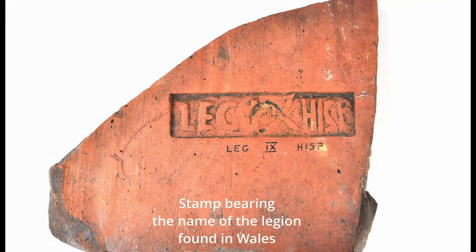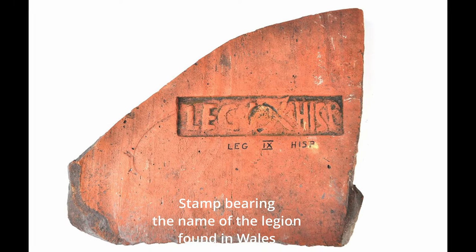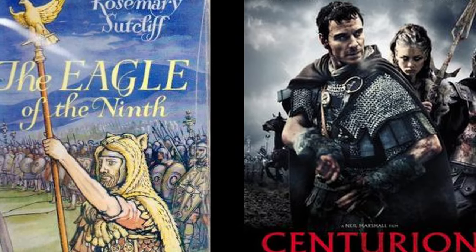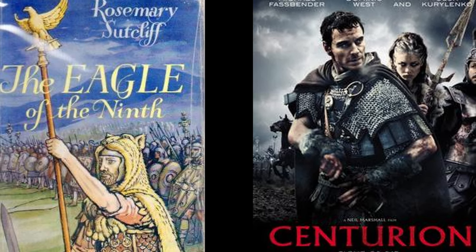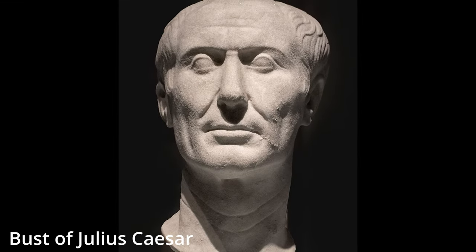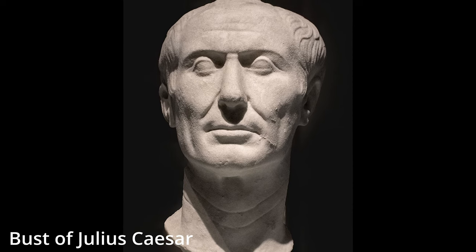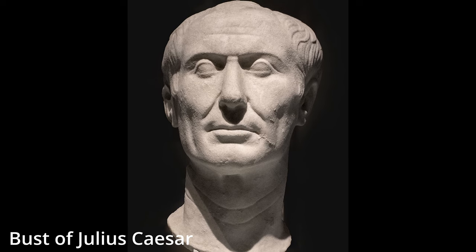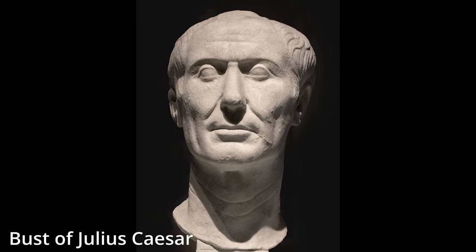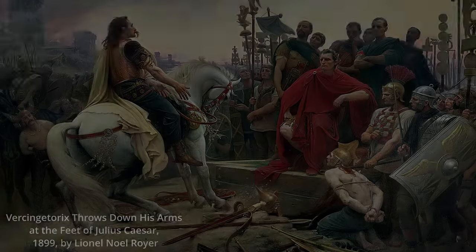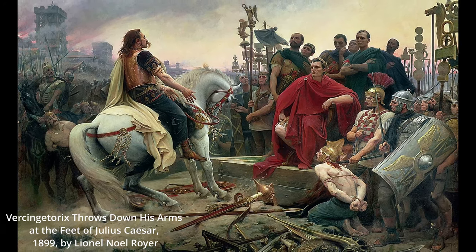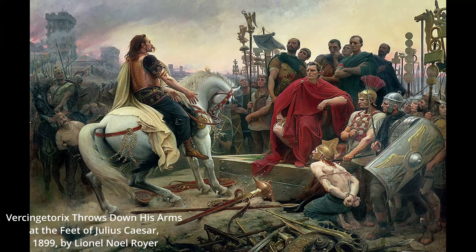The Legio IX Hispana, or the 9th Spanish Legion, was a Roman legion that has been lost to history, becoming something of a cultural icon with novels, movies, and endless theories about what happened to it. The legion likely got its start in 90 BCE during the Social War, but is most famous for being assigned to Julius Caesar when he became governor of Cisalpine Gaul, inheriting the 7th, 8th, 9th, and 10th legions. The legion served under Caesar during his Gallic Wars and his civil wars, after which it was disbanded and the veterans settled in Italy around the city of Piscinium.